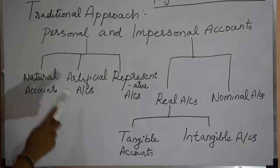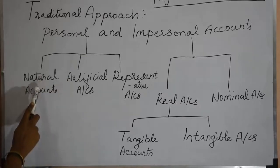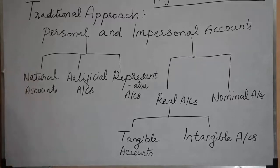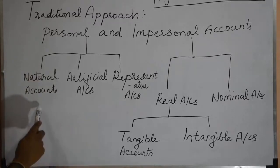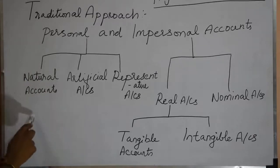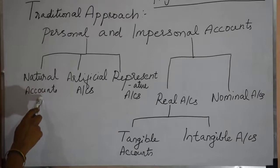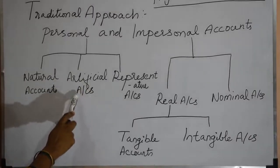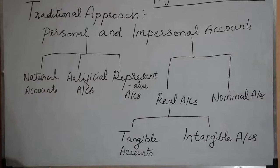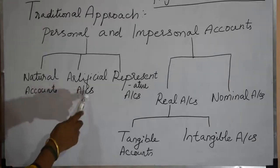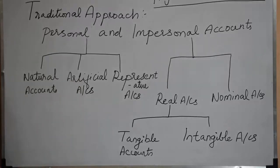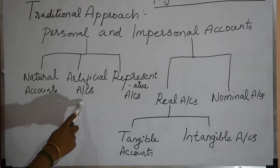First we will see what a natural account is. A natural account specifies persons — that is, accounts which specify only persons are natural accounts. Artificial accounts are accounts which specify entities other than human beings or persons, such as banks and financial institutions.